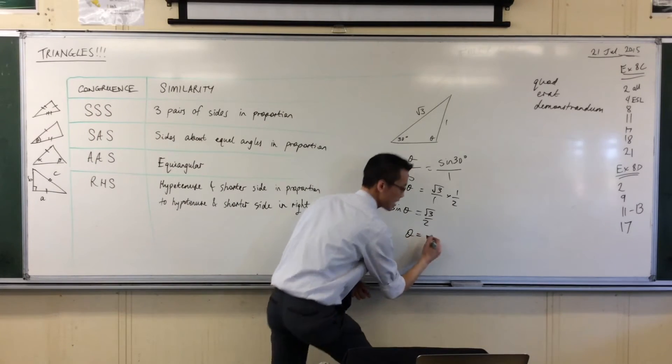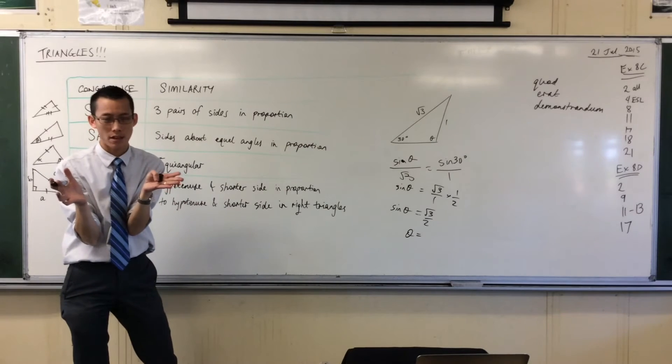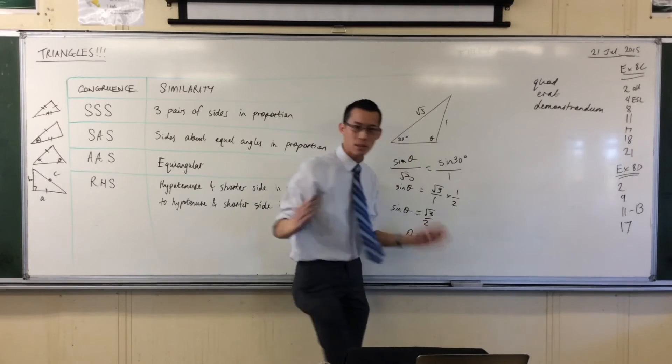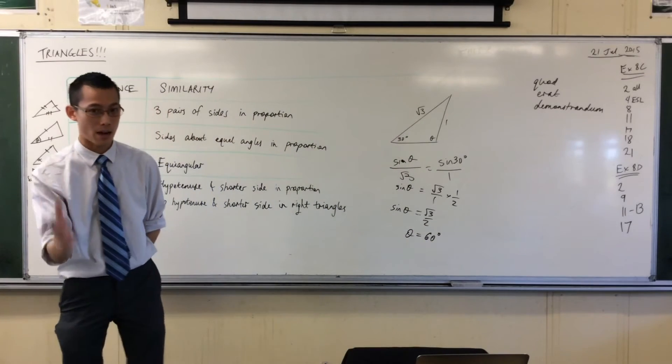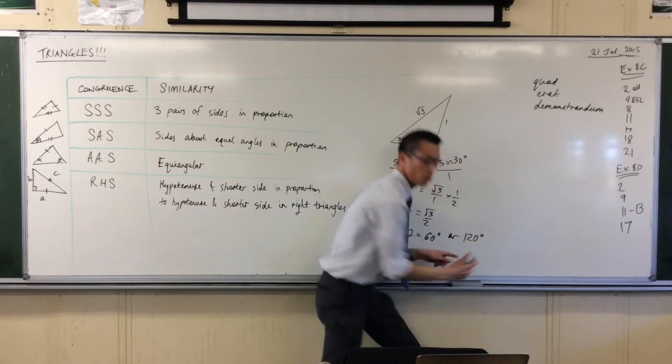You have to say theta equals, right? What's your base angle? What's the first time that it's equal to root 3? It's 60 degrees. But of course, that's only one of the things it could be, right? It could also be 120. There's an acute version and there is an obtuse version.